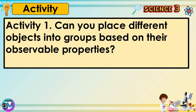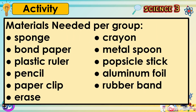Activity 1. Can you place different objects into groups based on their observable properties? Materials needed per group: sponge, crayon, bond paper, metal spoon, plastic ruler, popsicle stick, pencil, aluminum foil, paper clip, rubber band, eraser.